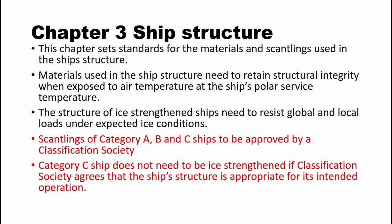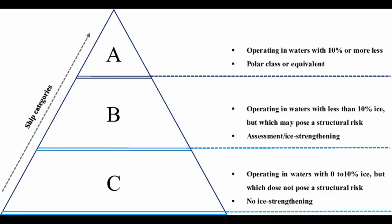Chapter 3: Ship Structure. This chapter specifies the type of material and scantlings used to maintain the structural integrity of a polar ship. Materials used in constructing a polar ship intended to operate in lower temperatures must have the ability to withstand polar service temperature. For ice-strengthened ships, the ships must be designed to resist both global and local structural loads which can occur in unexpected harsh weather conditions. All materials used for construction of polar ships must be approved by administration. Category A and B ships must strictly follow the rules of this chapter, whereas Category C ships must also be approved by administration, but the strength of construction depends entirely on which area the ship operates.